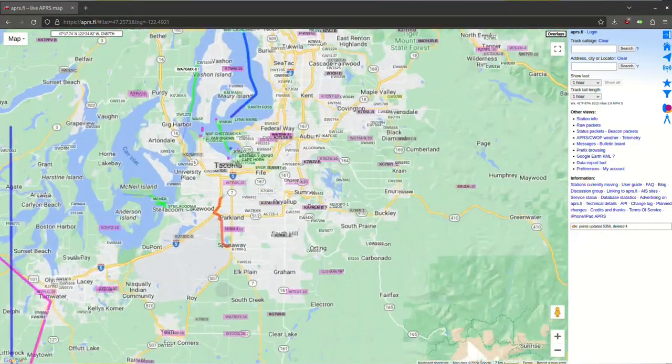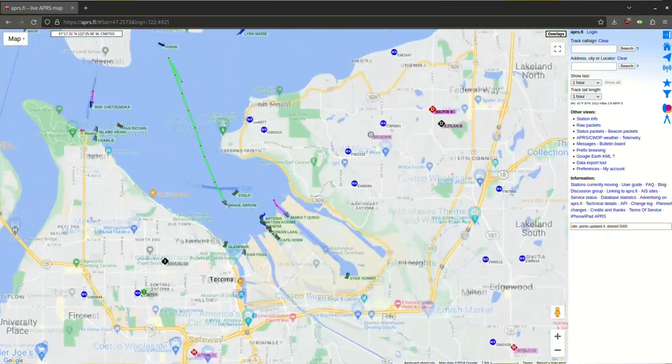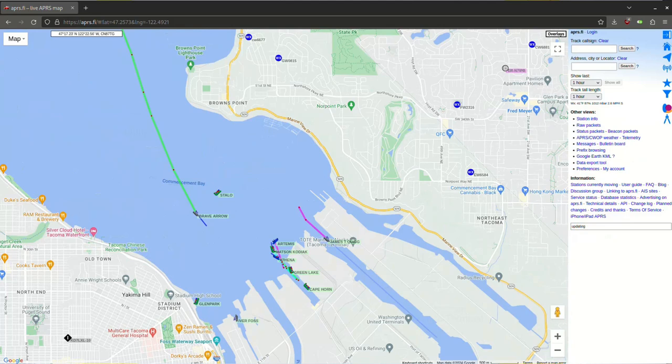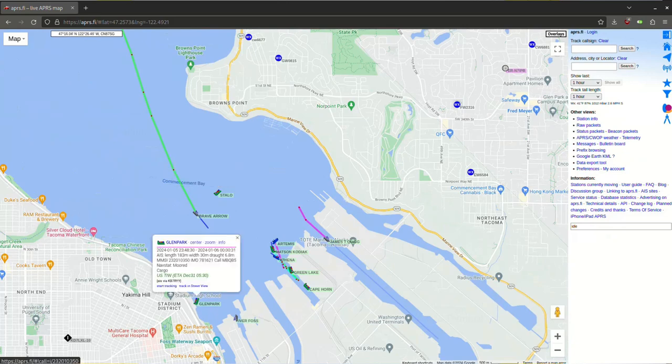APRS stands for Automatic Position Reporting System. It mostly requires the use of GPS, but it's basically like a shared moving map. You can transmit location reports, weather information, SMS messages, all sorts of tactical stuff. There are even stations that connect the APRS network to the internet, called Digipeaters. This is very useful for EMCOM.